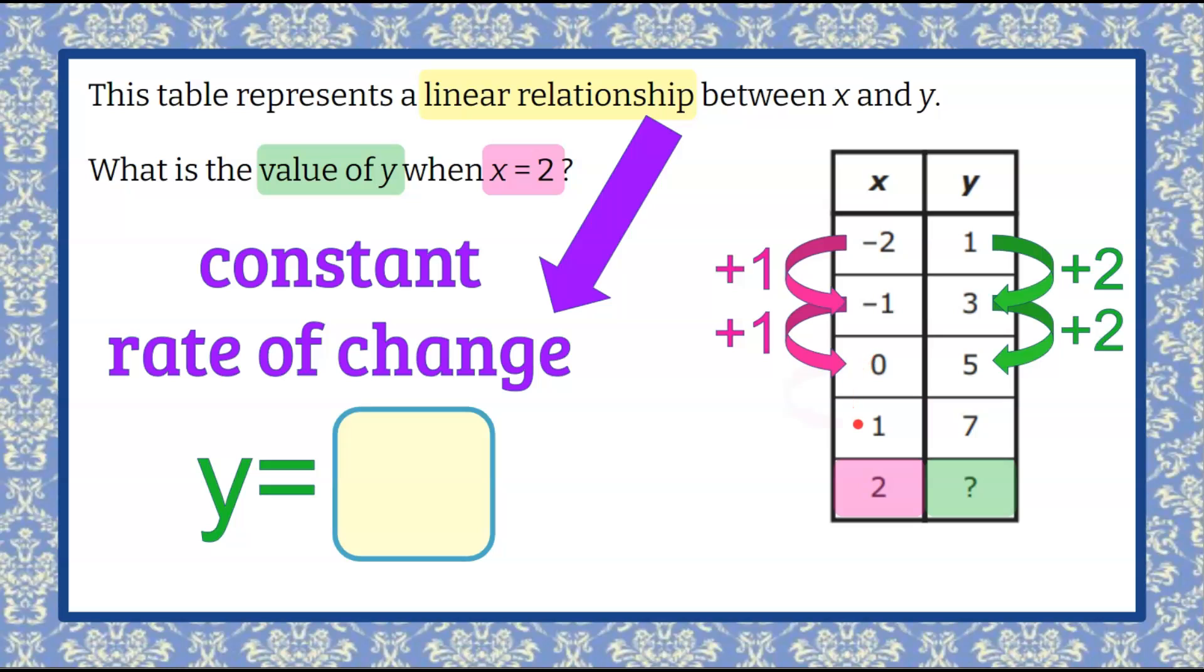5 to 7 is an increase of 2. 1 to 2 is an increase of 1. And then 7 increased by 2 - it has to be the same. 7 plus 2 is 9.